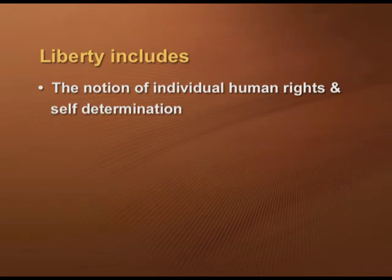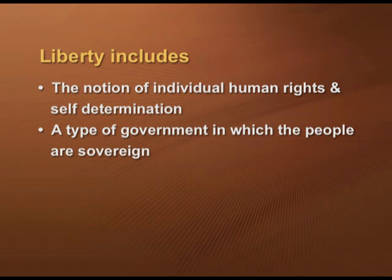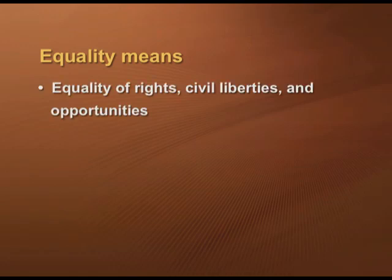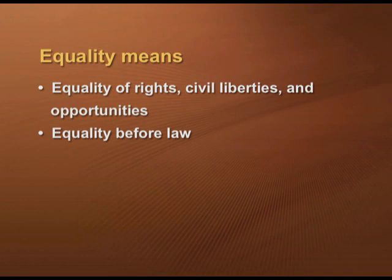The two ideas that appear most prominently in the philosophy of enlightenment are liberty and equality. Liberty includes the notion of individual human rights and self-determination. It incorporates a type of government in which people are sovereign and establishes the importance of a representative assembly and written constitution. Equality means equality of rights, civil liberties and opportunities — equality before law and no special privileges given to the rich. Equality also means careers open to talent, that is, careers open through achievement rather than hereditary ascription.